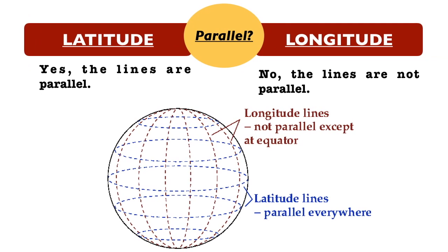The next difference is the parallelism. The latitude lines are parallel whereas the longitude lines are not parallel. You can see in the image all the circles constructed by the latitude lines are parallel, whereas the longitude lines are only parallel at the equator but they intersect at the south or north poles.